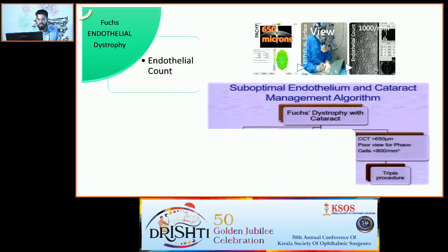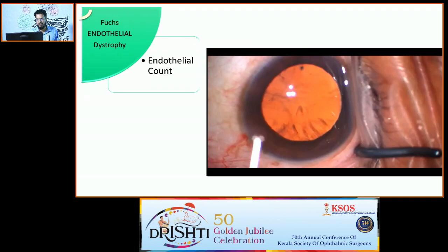If the cornea is already thick — more than 650 microns — with a cell count below 800, it is ideal to perform both procedures together. As with PKP, endothelial cell count must be carefully considered throughout.